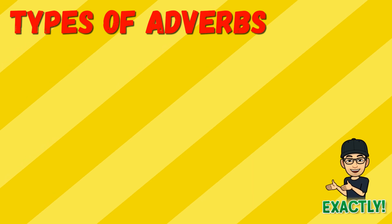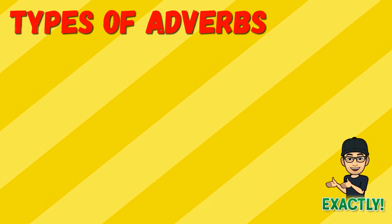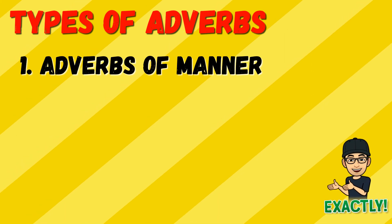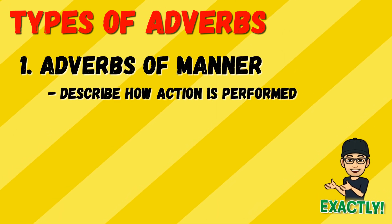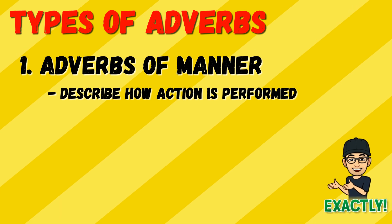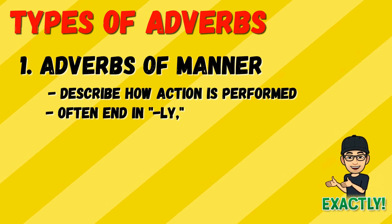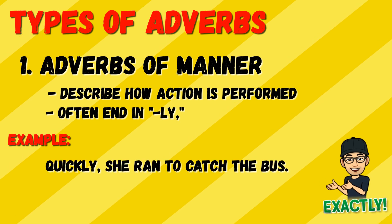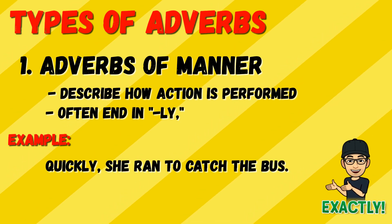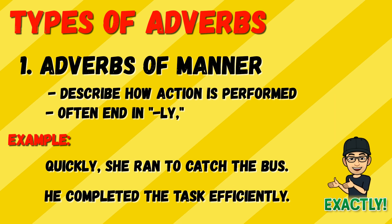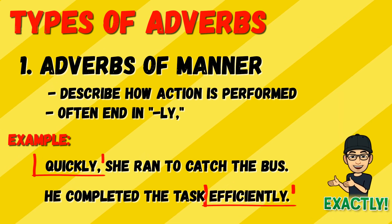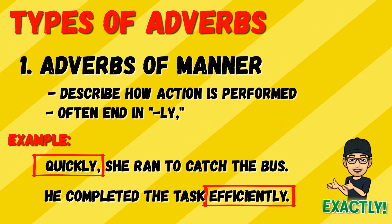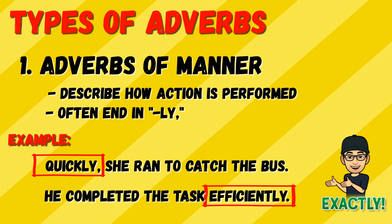In English there are seven major types of adverbs. The first one is adverbs of manner. These adverbs describe how an action is performed. They often end in -ly, although there are many exceptions. For example: 'She ran quickly to catch the bus' and 'He completed the task efficiently.' Quickly and efficiently are adverbs of manner because they answer the question 'how.'